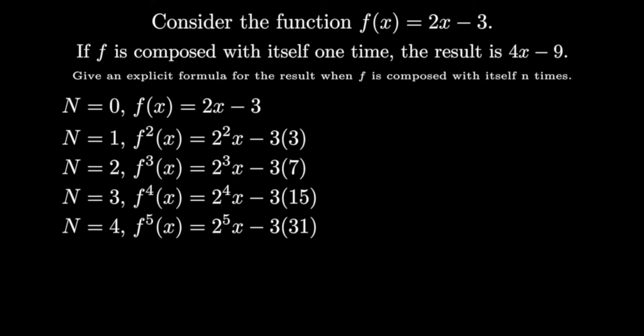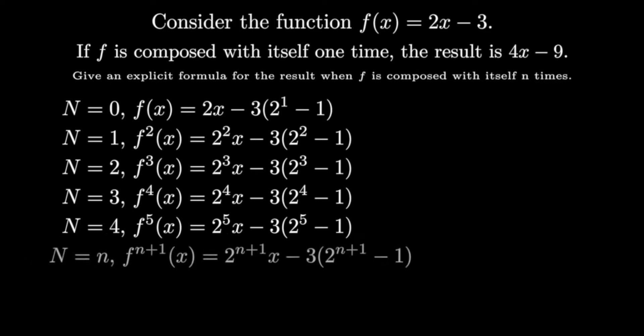Like if you look at the coefficient of x, you'll see 2, 2 squared, 2 cubed, 2 to the 4th, etc. If you look at the constant, you can see negative 3 times 2 minus 1, 2 squared minus 1, 2 cubed minus 1, 2 to the 4th minus 1, etc. Thus, with our observations, we could write a general form for what we're guesses as when f is composed with itself n times, you get 2 to the n plus 1 times x minus 3 times 2 to the n plus 1 minus 1.